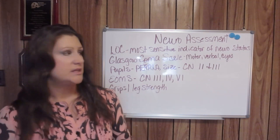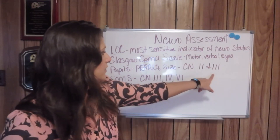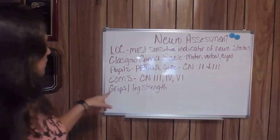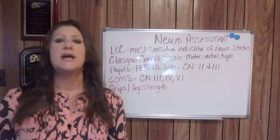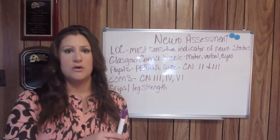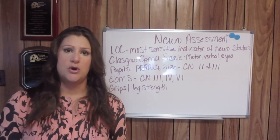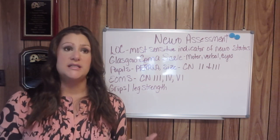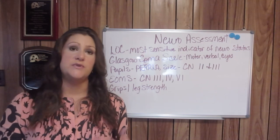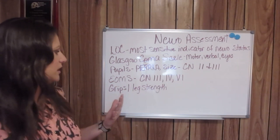By checking pupils you have already assessed cranial nerves 2 and 3. Cranial nerve 2 is the optic nerve, which assesses vision and visual acuity. Cranial nerve 3 assesses pupil constriction and dilation. Next are EOMs — extraocular movements. If you have your patient follow your pen and their eyes start to wiggle, that is called nystagmus. Checking EOMs knocks out cranial nerves 3, 4, and 6.